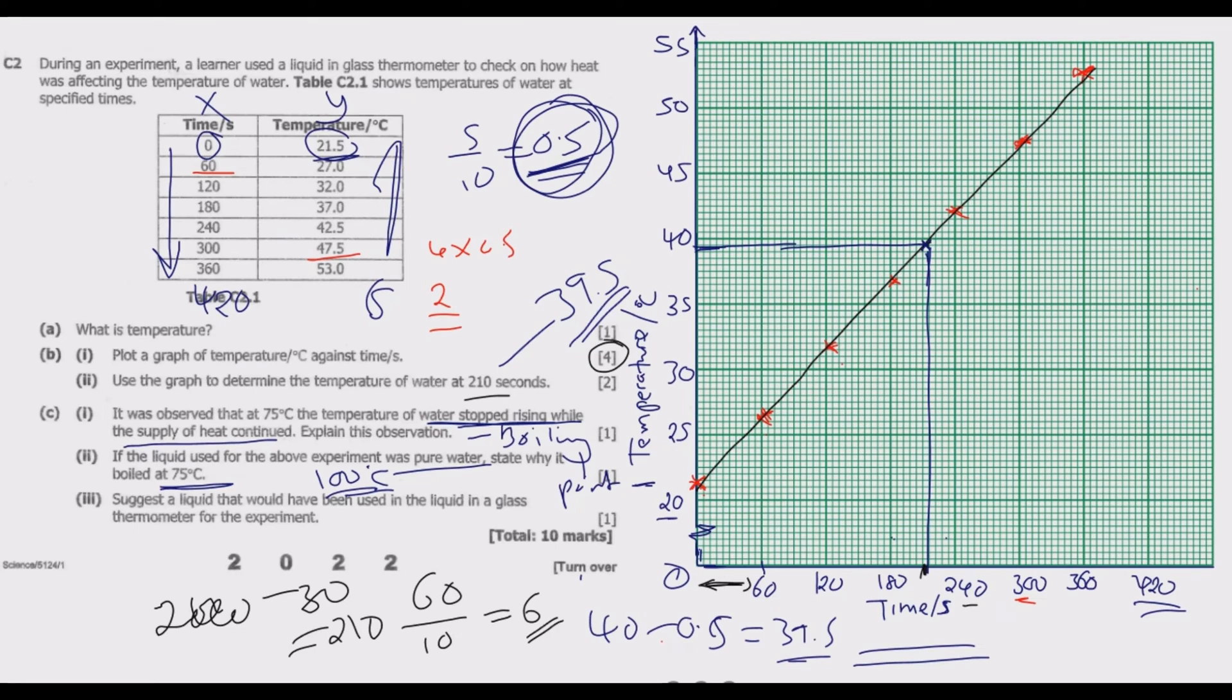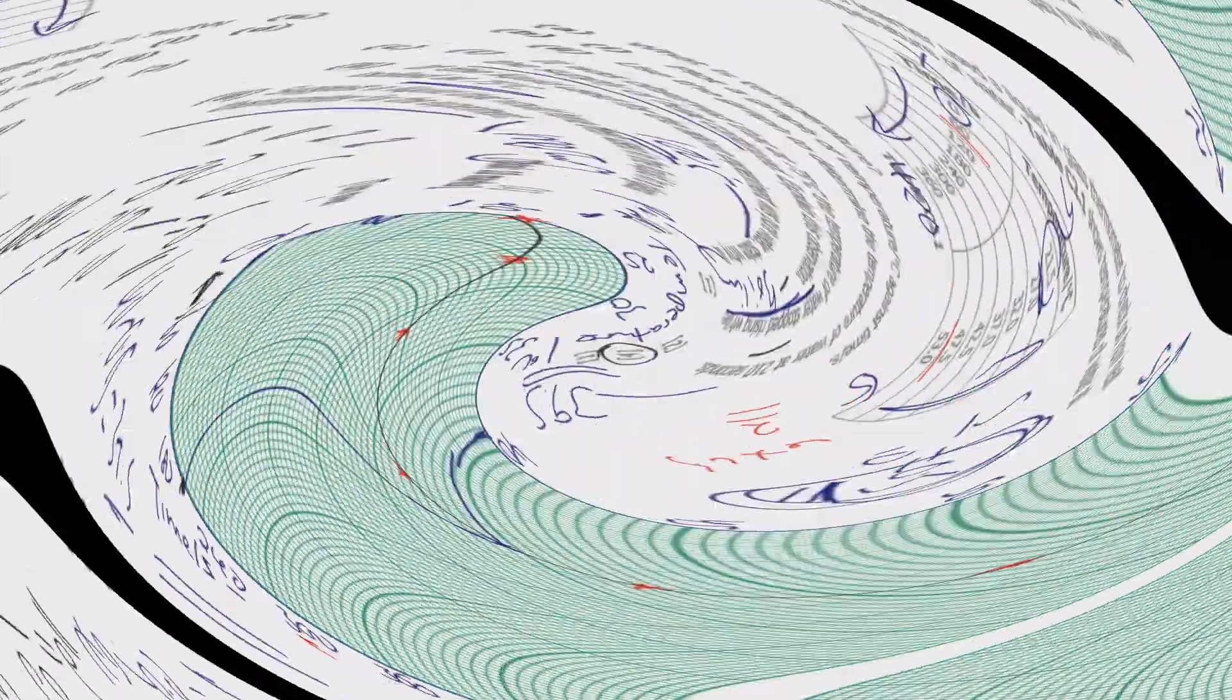Question C(iii): suggest a liquid that would have been used in the liquid in a glass thermometer for the experiment. The liquid that could have been used is mercury. Mercury is normally what is used most of the times in a glass thermometer because it expands quickly. This is how you answer this question to get the 10 marks.